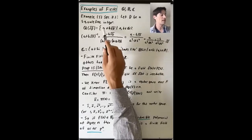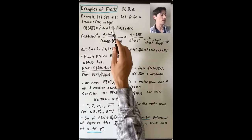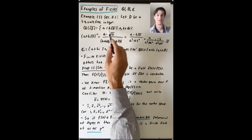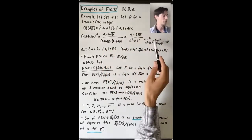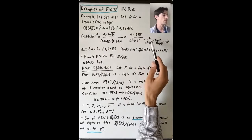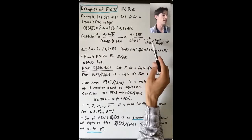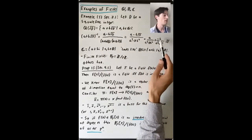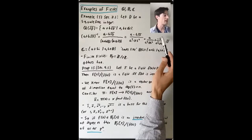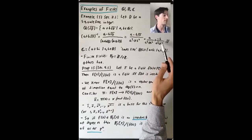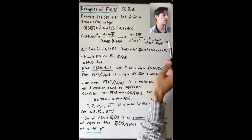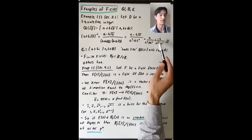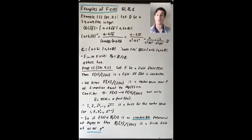Why is that of the form a + b√d for some two rational numbers? Well, it's a/(a² − db²), which is some rational number, plus (−b/(a² − db²)) times √d, which is some other rational number. So we've seen that every element has a multiplicative inverse by actually writing down what that inverse is.